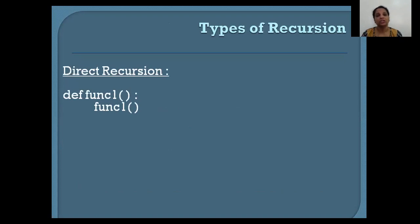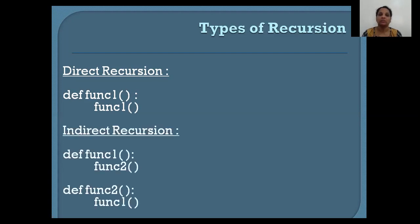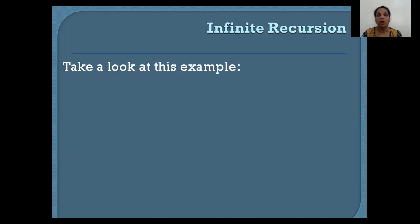Now what are the types of recursion? The first one is direct recursion — a particular function calls itself. Look at the example on the screen: I have defined a function named func1, and in the body of the function I am calling the function itself — that is direct recursion. Indirect recursion means one function calls a second function, and the second function calls the first function — they mutually call each other. I have defined func1 and func2: func1 calls func2 and func2 calls func1.